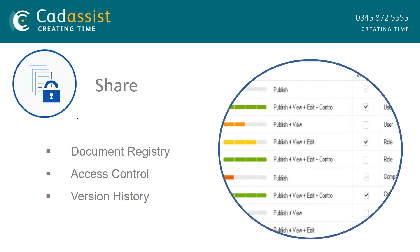BIM 360 Docs can also aid sharing documents by ensuring that the right people have access to the right information. You can track and maintain versions to help identify changes or roll back to an earlier point in time. Controlling the release of information has always been tricky, but with BIM 360 Docs you can do this through permissions and access rights. You can also assign permissions at user, role, or company level.